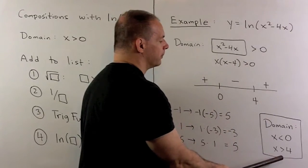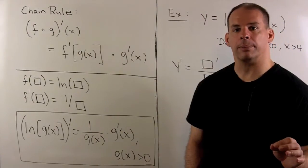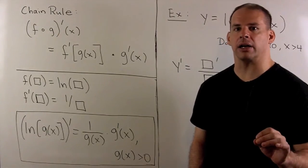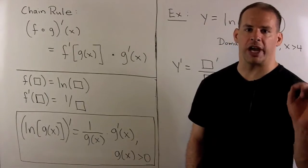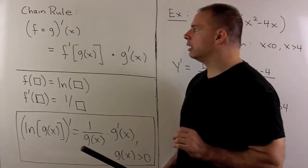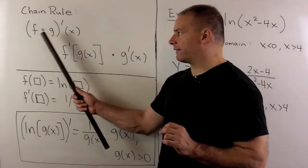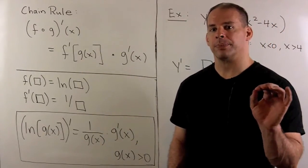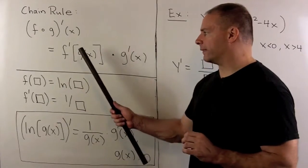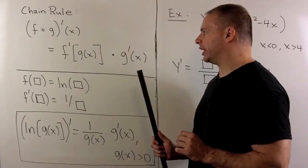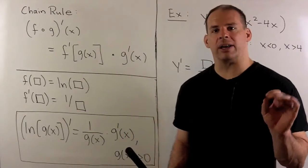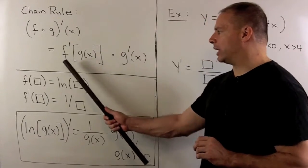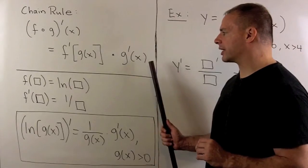Now we want a rule for taking the derivative of a composition with natural log, so we'll need the chain rule. Recall: if I take f composed with g and differentiate, the rule is f prime evaluated at g of x times g prime of x.